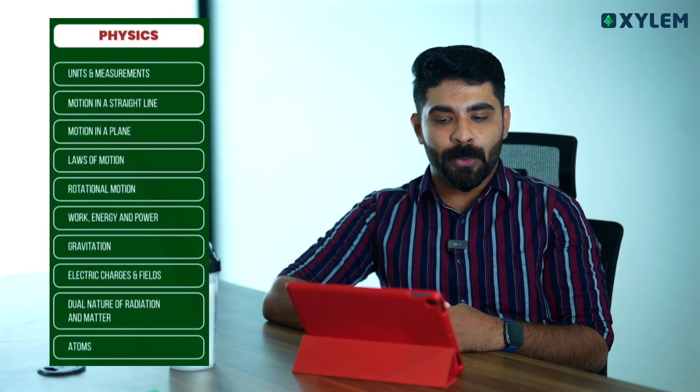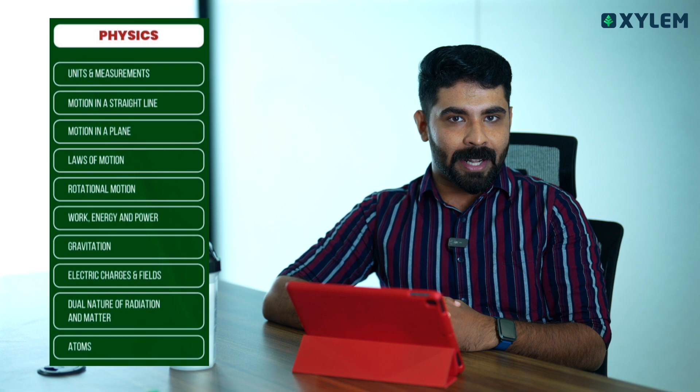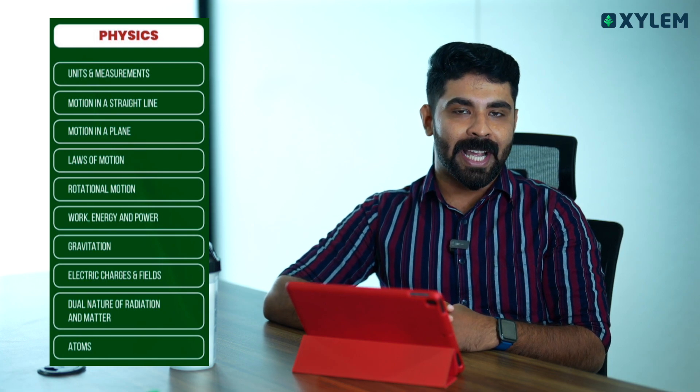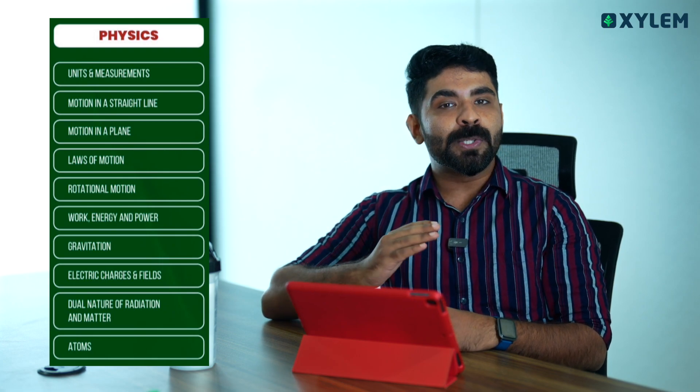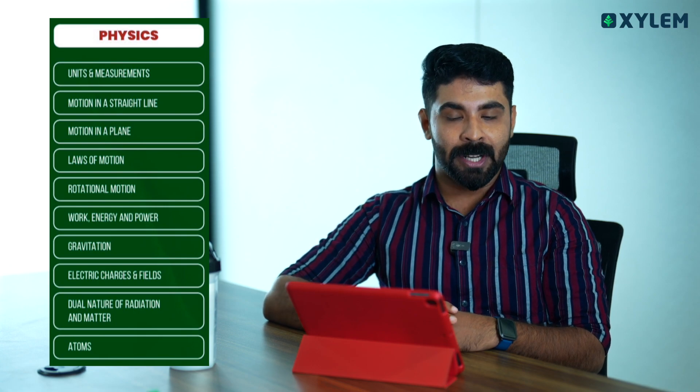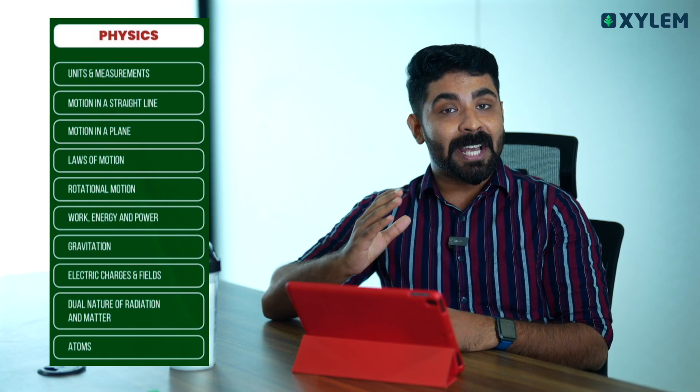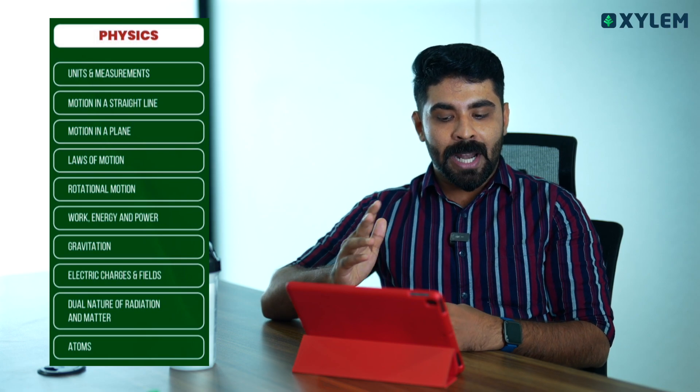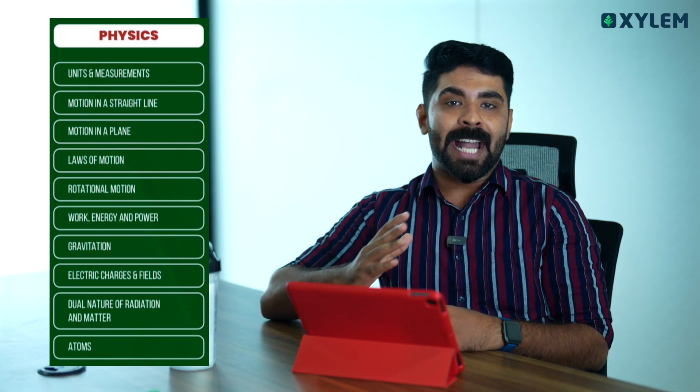We need to learn about any of these chapters in physics. In physics, we need to learn units and measurements, motion in a straight line, motion in a plane, laws of motion, rotational motion, work energy power, gravitation, electric charges and fields, dual nature of radiation and matter, and atoms.